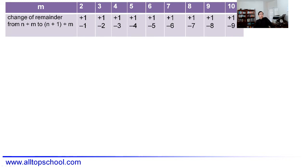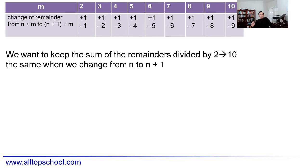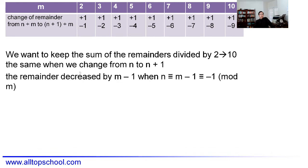I'll make a list for divisors m from 2 to 10. For each divisor, the remainder either increases by 1, or drops by m−1: divisor 2 drops 1, divisor 3 drops 2, divisor 4 drops 3, divisor 5 drops 4, and so on up to divisor 10 which drops 9. The remainder decreases by m−1 only when n is exactly one less than a multiple of the divisor.